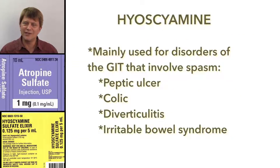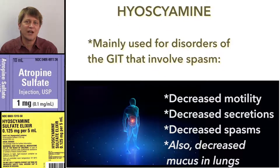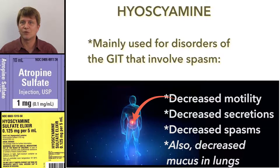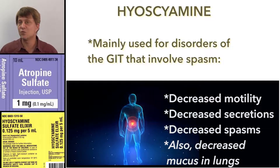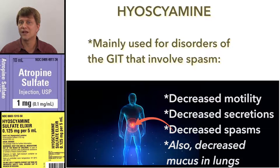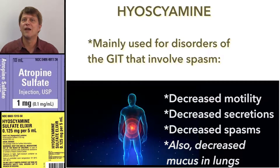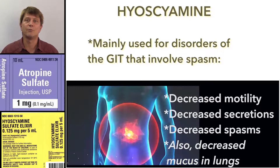Hyoscyamine is a less frequently used medication for treating bradycardia; its primary use is in gastrointestinal tract disorders. It decreases the motility and secretions of the gastrointestinal tract, making it effective in conditions involving spasm — such as diverticulitis, irritable bowel syndrome, peptic ulcers, and other GI disorders. It is also used to decrease mucous secretions in people who are in palliative care.